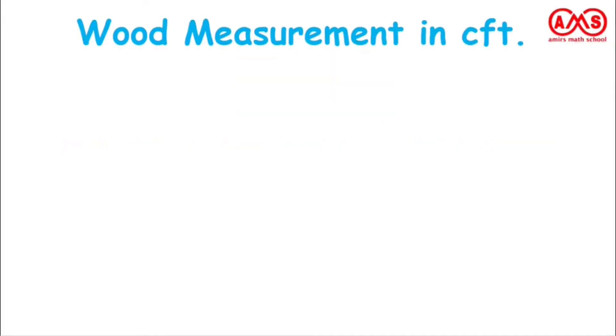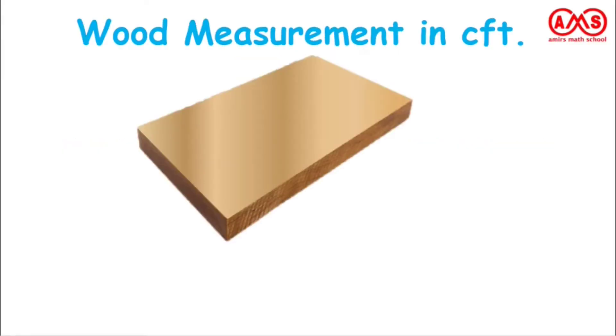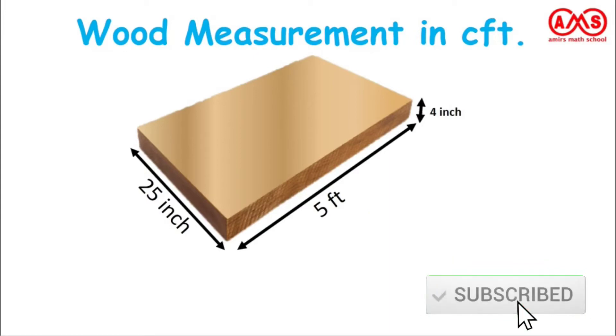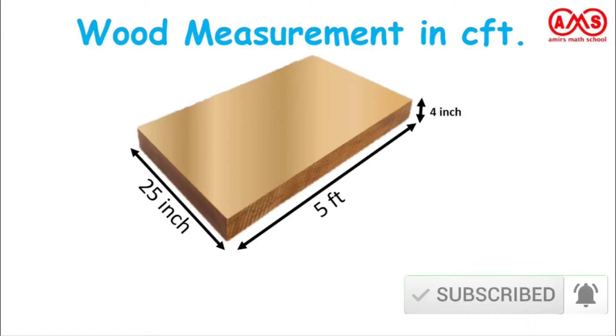Now the wood measurement in CFT. Suppose this is our wood and we want to measure this wood in CFT, that is in cubic feet. The length of this piece of wood is 5 feet, the breadth is 25 inches, and the height — that is the thickness of this wood piece — is 4 inches. In that case, what is the measurement of this wood piece in CFT?